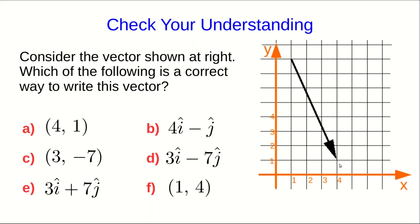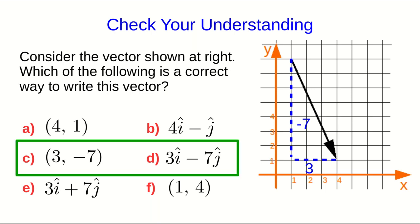How did you do at writing down this vector? All we need to do is look at, as you go from the tail to the tip, how far in the x and y direction do you go? And so the answer is either c or d. Both of those notations are fine.